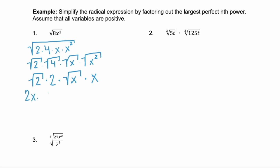A little rearranging, and we have 2x times the square root of 2 times the square root of x. Since these two square roots have the same index, we can combine them into one radicand — 2x times the square root of 2x.